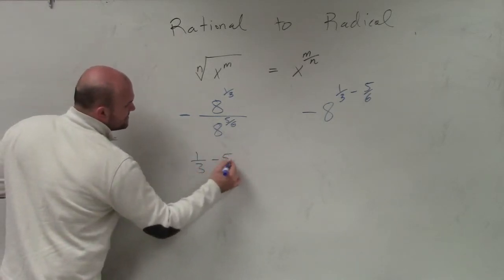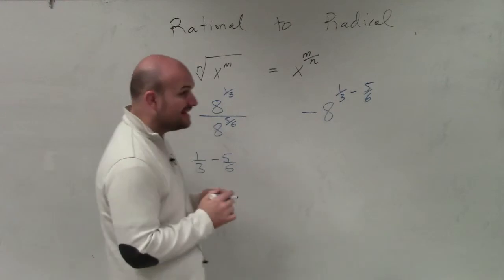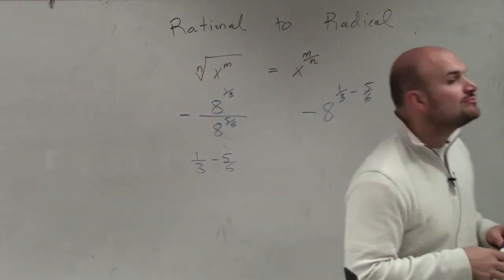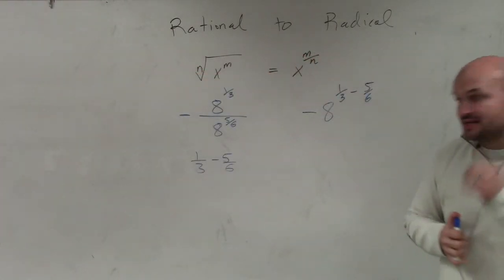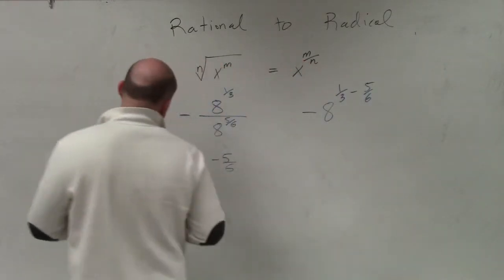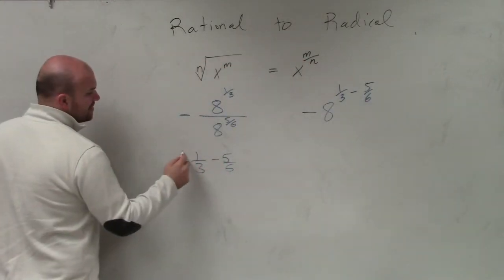If I do 1/3 minus 5/6, what we discussed at the beginning of the year was when you're subtracting or adding fractions with unlike denominators, you have to get common denominators. So to get the common denominator, notice the common denominator is 6.